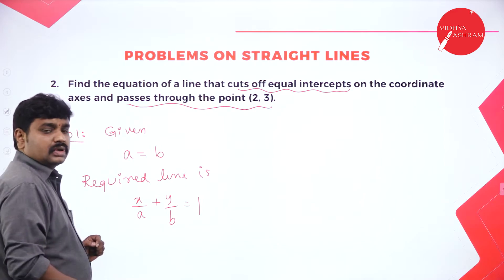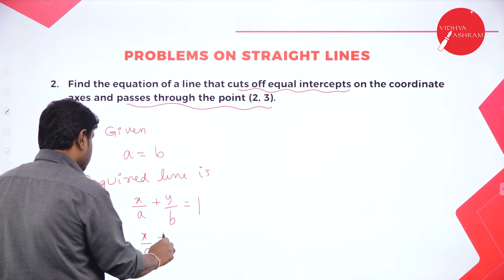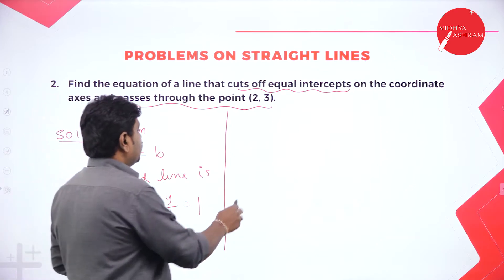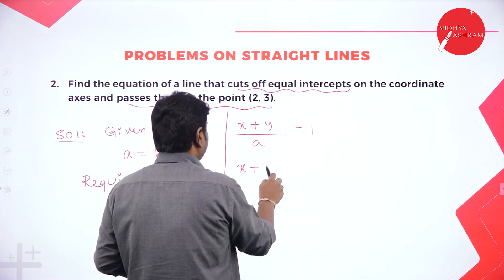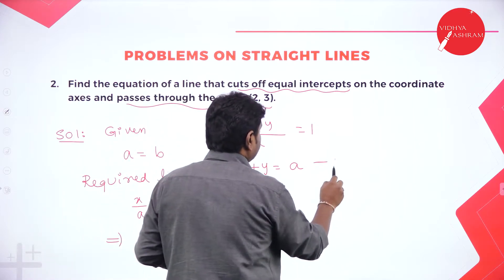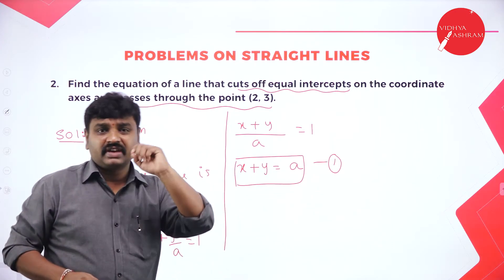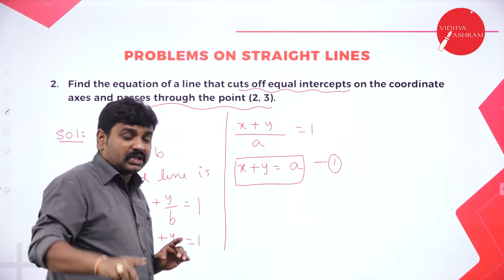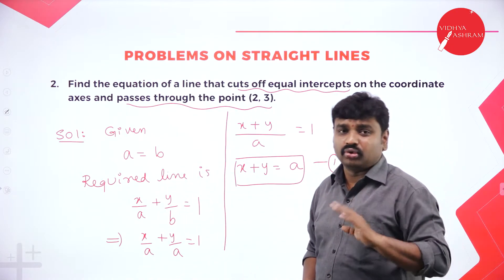Because a equals b, substitute b with a in the intercept form: x by a plus y by a equals 1. Taking LCM, (x + y)/a equals 1, so x plus y equals a. This is our line, but it contains unknown a. To find a, we use the hint that the line passes through (2, 3) — if any line passes through any point, you can substitute that point into the line equation.